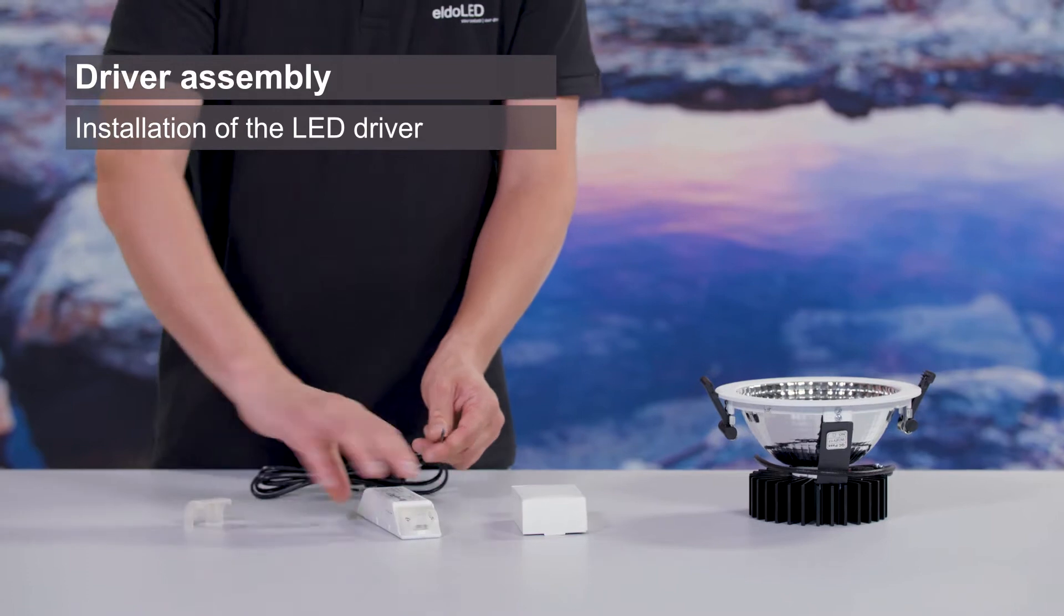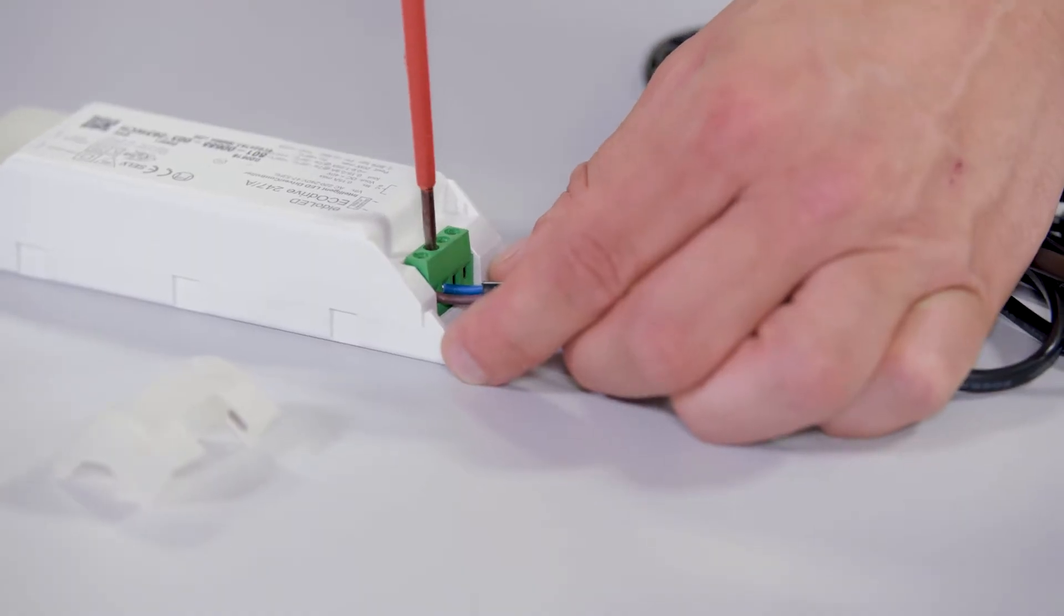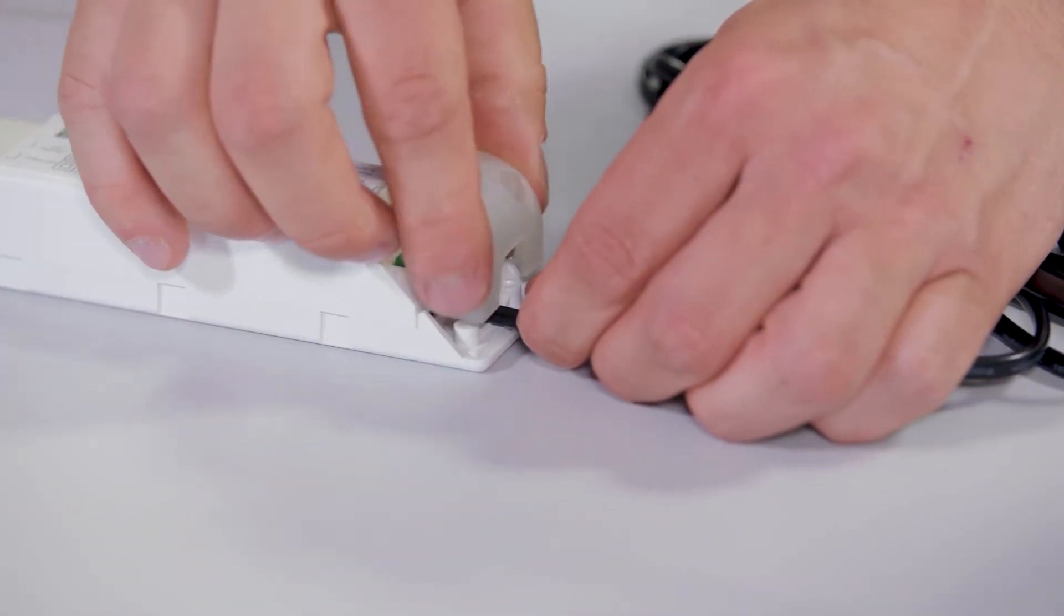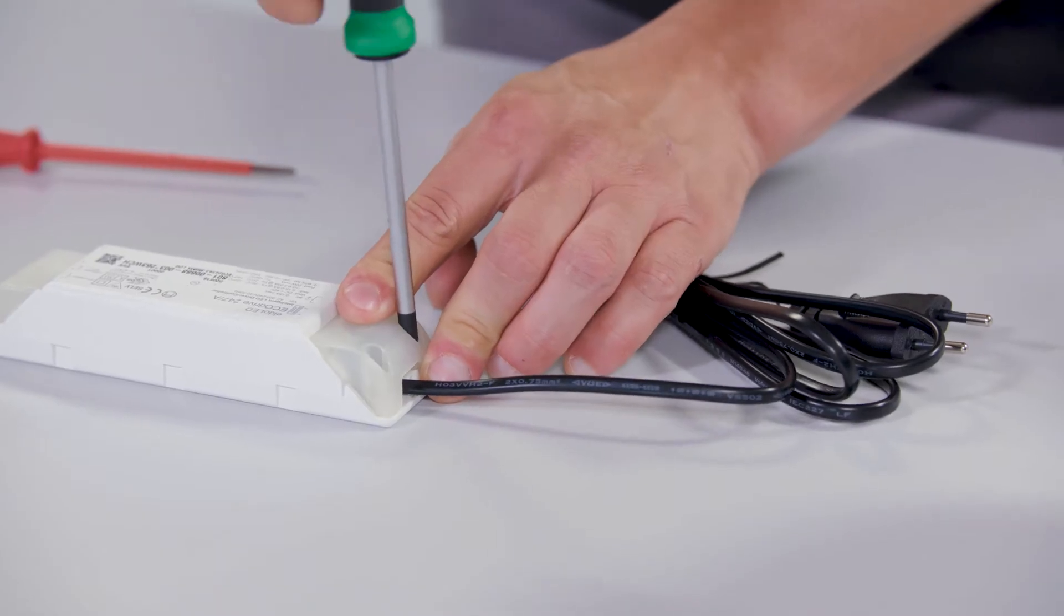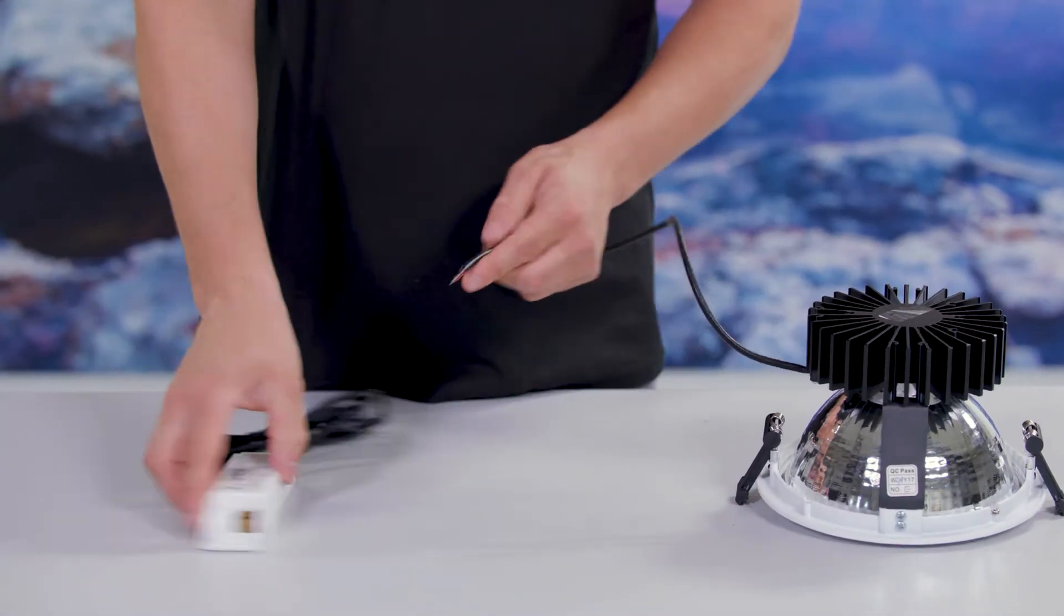Before we go there, we will connect the LED driver first. Connect the power cable to the LED driver and mount the end cap. Connect the LED wiring of the downlight to the LED driver.